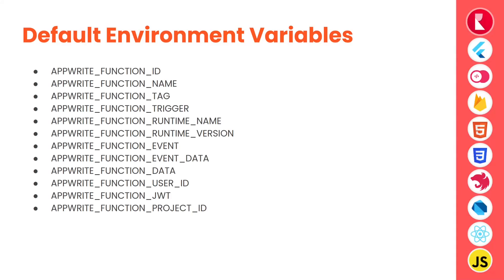Runtime name — the name of the runtime, for example Node.js runtime version 14.5. Function event — the exact event name, which is only available if the function trigger is event. So if a function is triggered by a system event, AppWrite function event will consist of the name of the event, for example account.create. AppWrite function event data — also only available if the trigger is event — consists of any payload the trigger includes. So if an event is triggered by account.create, the function event data should consist of the JSON data of the account.